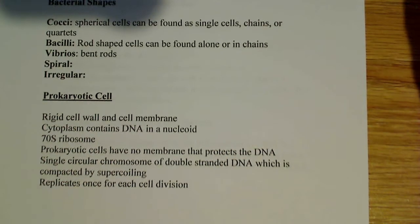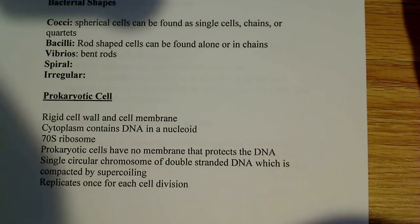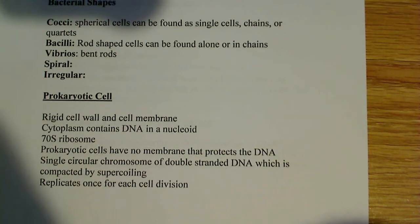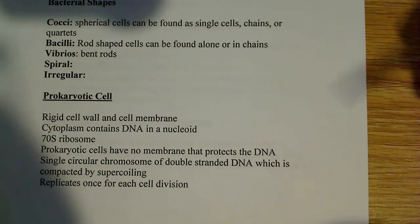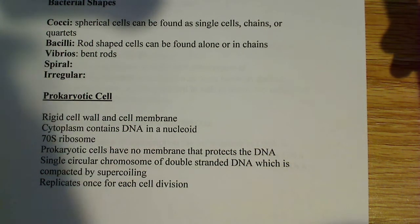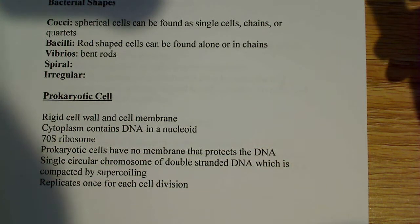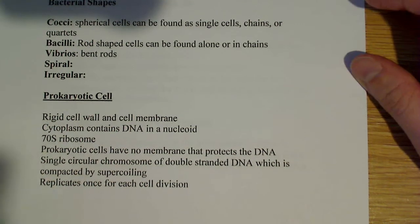The small 30S subunit of the 70S ribosome contains 16S ribosomal RNA. 16S ribosomal RNA is the RNA used by Carl Woese to identify the three domains of life — that's an interesting fact.